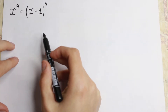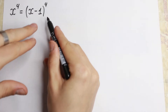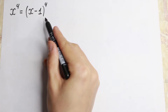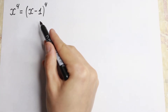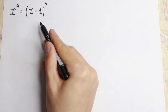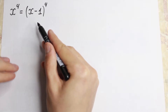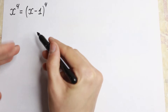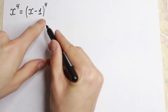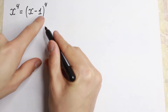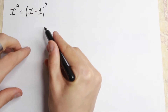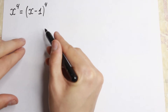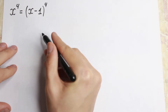We have x to the fourth power equal to (x minus 1) all raised to the fourth power. How can we solve this? We have a fourth power, not a casual second or third power. We need to solve this using the binomial theorem, because on the right hand side we have an expansion, so let's use the binomial theorem.